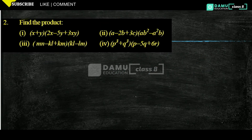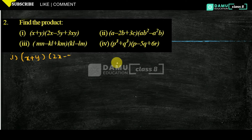Hello viewers, thanks for watching our videos. Here we are going to discuss the second question — find the product. So our first one is: (x + y) into (2x - 5y + 3xy).